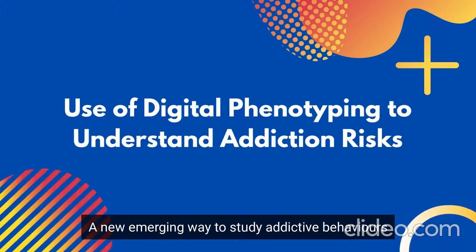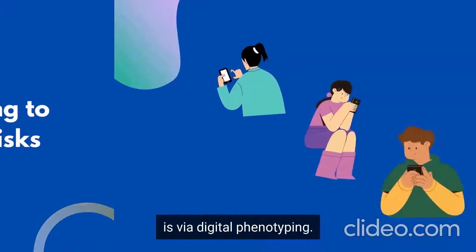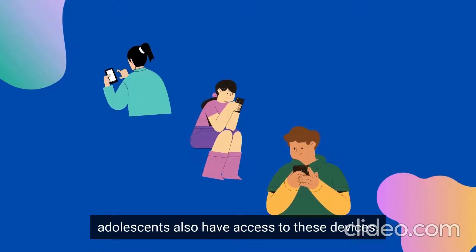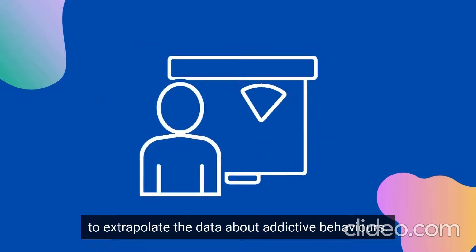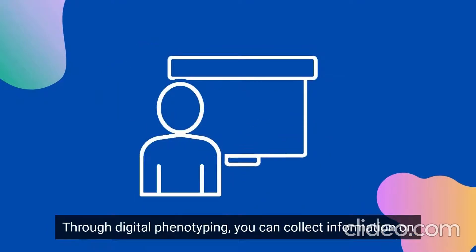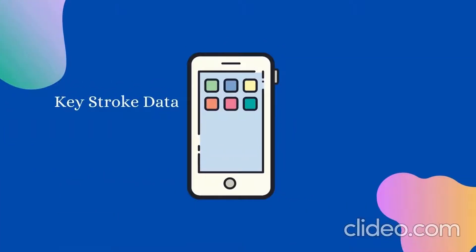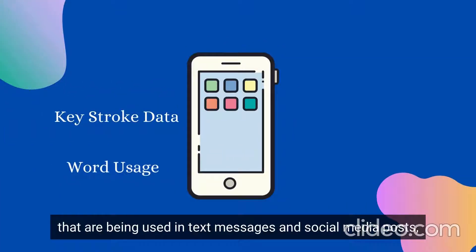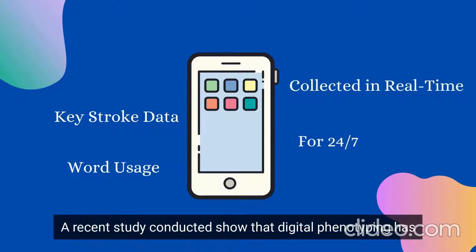A new and emerging way to study addictive behaviors is via digital phenotyping. In a world where smart devices are all around us, adolescents also have access to these devices. Using smartphones is proving to be an effective way to extrapolate data about addictive behaviors. Through digital phenotyping, you can collect information on keystroke data — including words used in text messages and social media posts — collected in real time, 24-7.